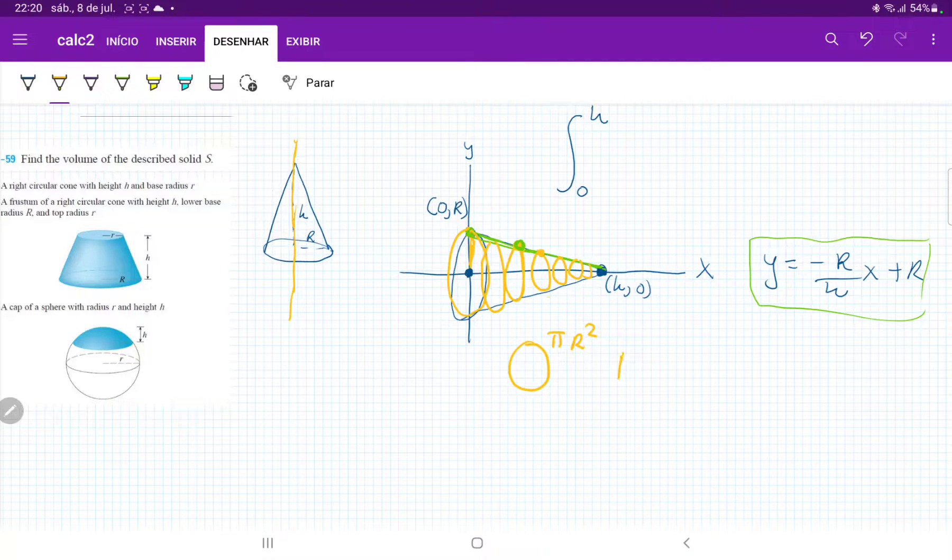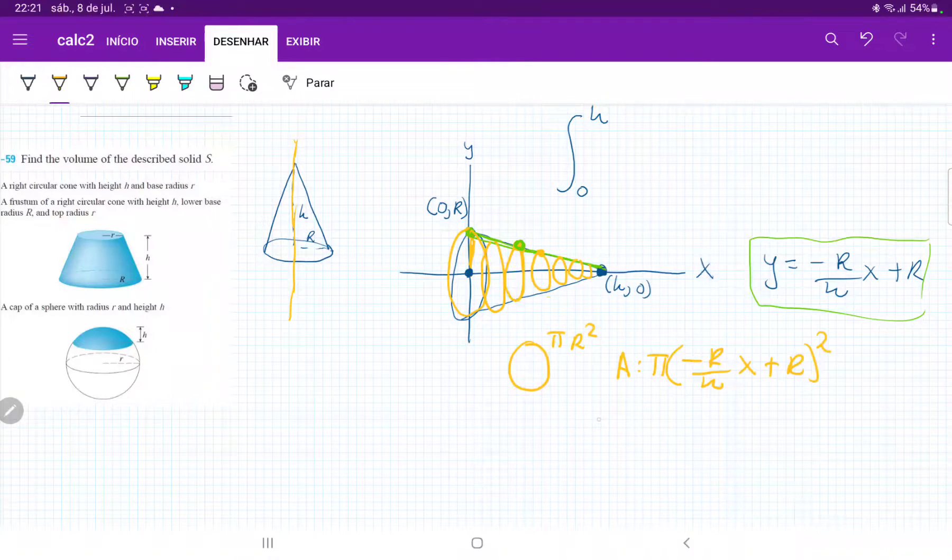So basically, our area is equal to pi times r squared. So minus r over hx plus r squared. So when we expand this, we're going to get pi times r squared x squared over h squared